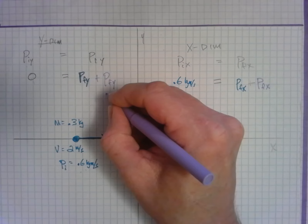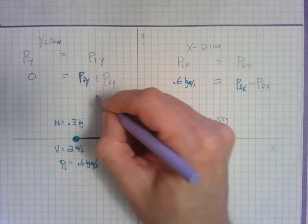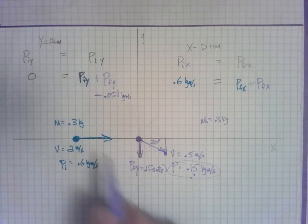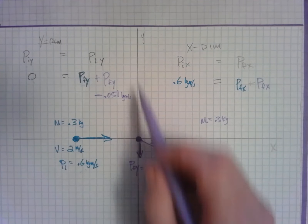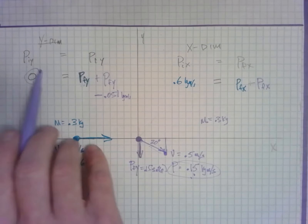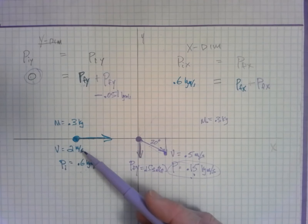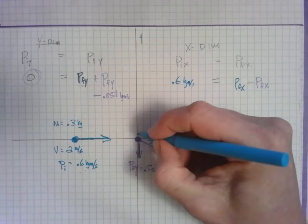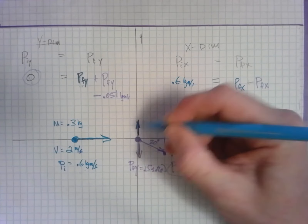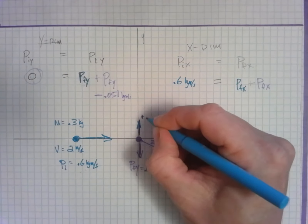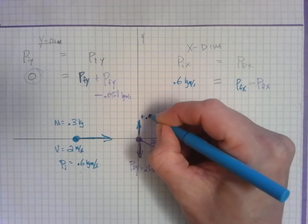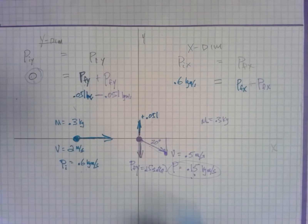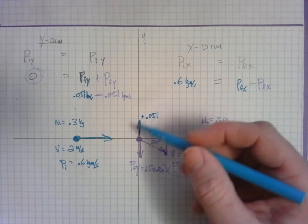That y-component for the purple ball is negative 0.051 kilogram meters per second because it's going downward. This means the blue ball's y-momentum after the collision has to be positive 0.051 kilogram meters per second — so that when they add together they equal zero, consistent with the fact that there was no initial y-momentum. The two balls must have identical y-component magnitudes but in opposite directions.